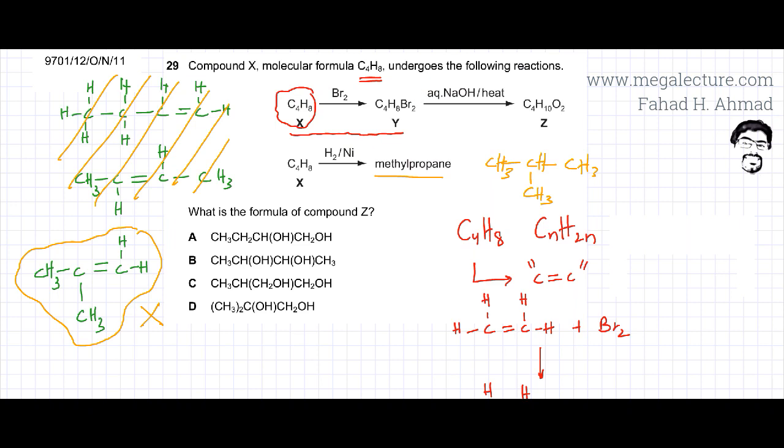So bromine will get added to this molecule. The double bond would be removed. So you'll get rid of the double bond and two bromines will be added to both carbon atoms. That's the first step.